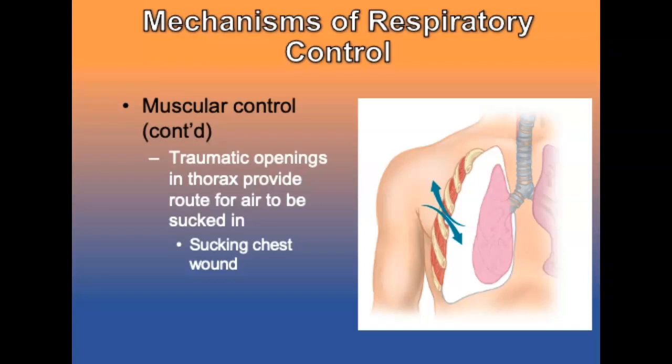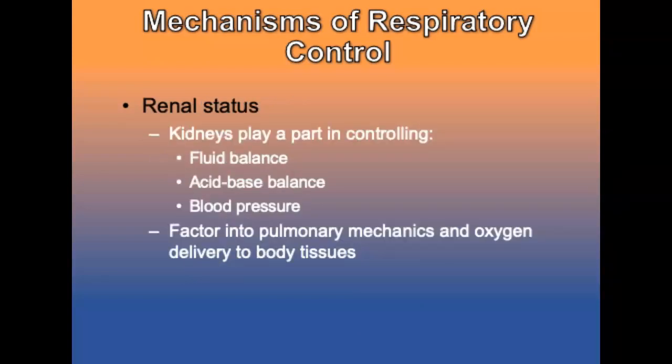Traumatic openings in the thorax provide a route for air to be sucked in, ending up in the pleural space and causing a sucking chest wound. In a flail chest, multiple ribs are broken in more than one place. Free-floating thorax sections are pulled in when the patient breathes, limiting the amount of air sucked through the trachea.